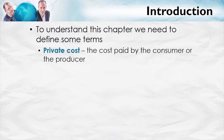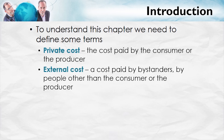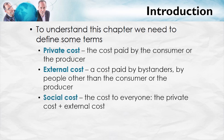With that as introduction, let's define some terms. Private cost: this is the cost paid by the consumer or the producer. External cost: this is a cost paid by bystanders — people other than the consumer or producer, people other than those buying or selling in this particular market. Social cost is the cost to everyone — consumers, producers, and bystanders. In other words, it's the private cost plus the external cost.